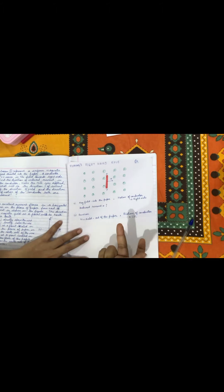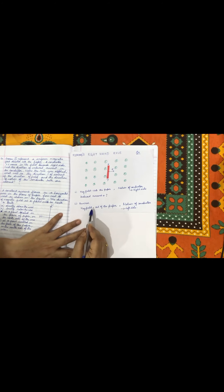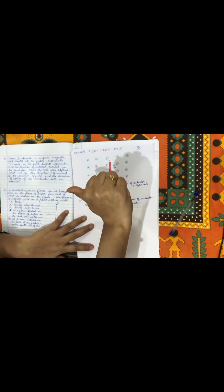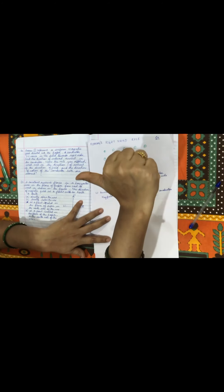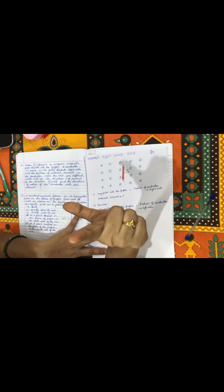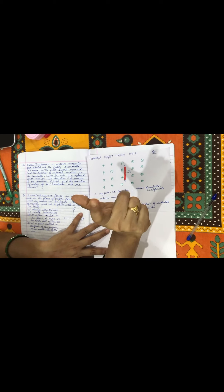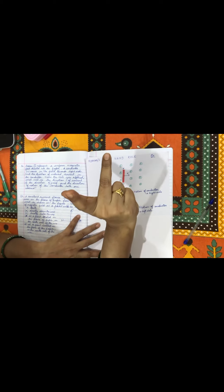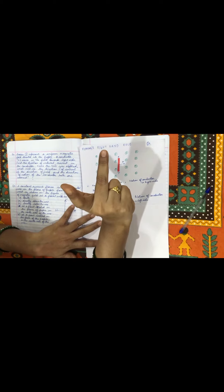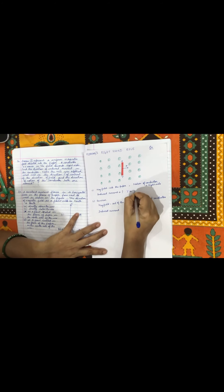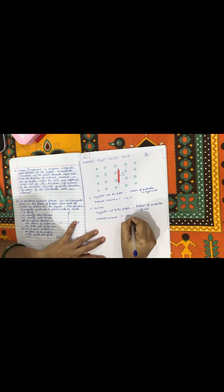The question also asks what happens if both are reversed — magnetic field out of the paper and conductor motion towards the left. With the thumb pointing left for motion and the index finger pointing out of the paper for the magnetic field, the middle finger again points from Y to X. So there is no change in direction; in both cases the current flows from Y to X.